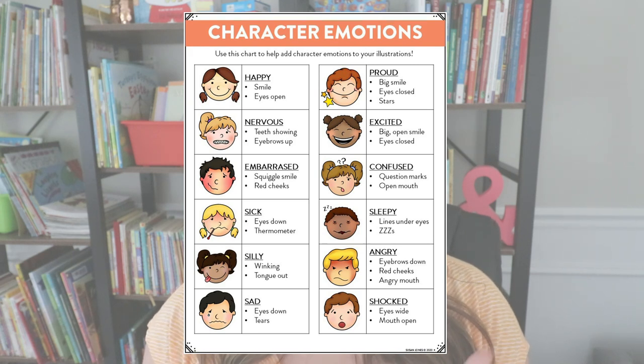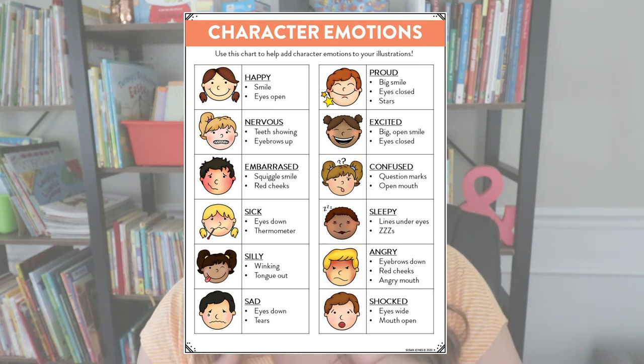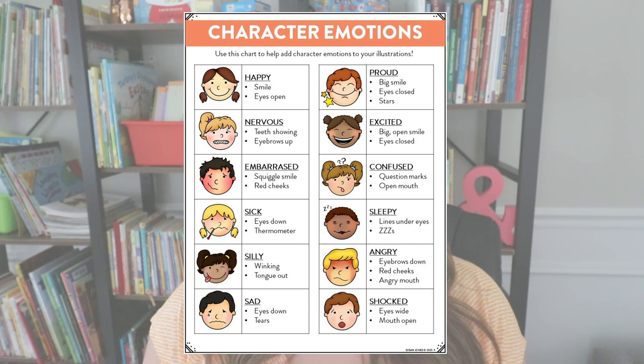We might add some red rosy cheeks, we might have our eyebrows pointed down, we might have some squiggly lines. That type of reference chart is one that I keep up for most of the year because students love looking at it to go back and add to their own illustrations, and it really does add quite a bit of emotion behind their story.